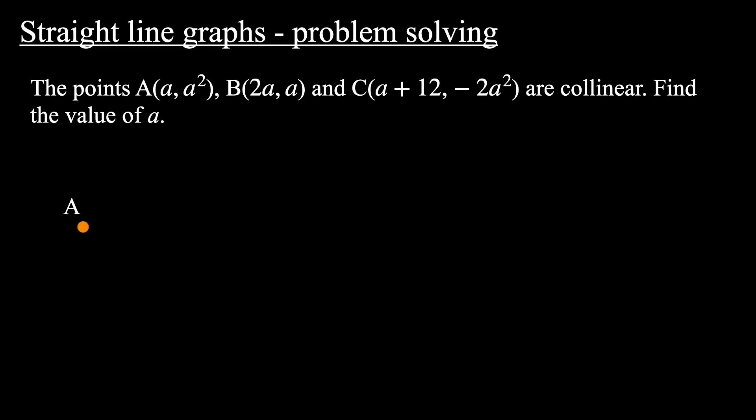So we are given three points A, B and C, and we're told they are collinear, meaning that we can draw a straight line through those three points. This means that there is a relationship between those points, and one of the things that allows us to solve this problem is the fact that between any two points on a straight line the gradient is the same.